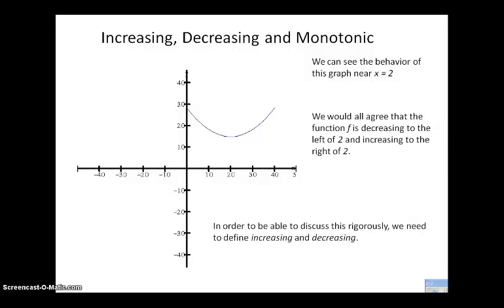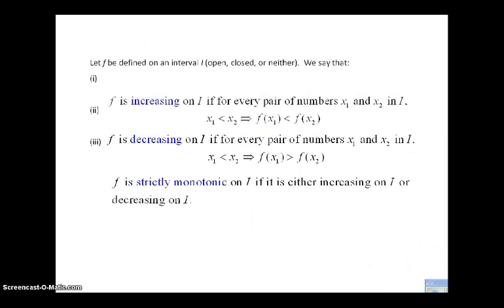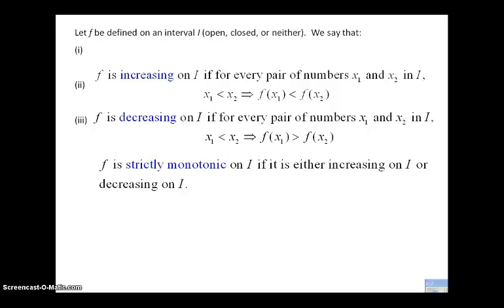In order to rigorously discuss what it means for a function to be increasing or decreasing — or to talk about monotonicity, which is the catch-all term for increasing and decreasing behavior — I want to define it very succinctly and very clearly. Let's look at the definition of increasing, decreasing, and what it means for a function to be strictly monotonic.